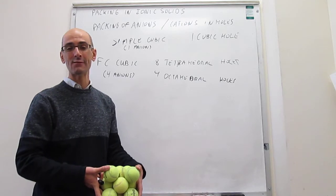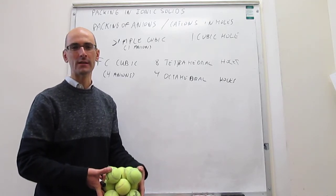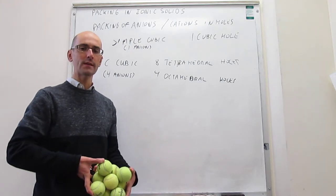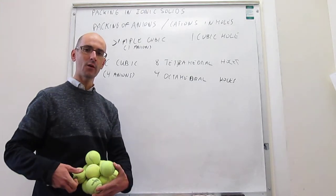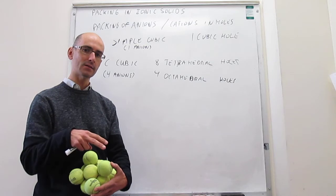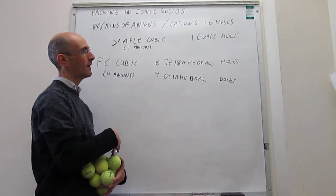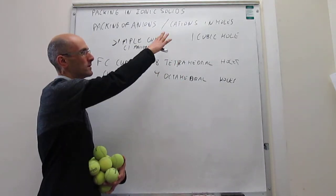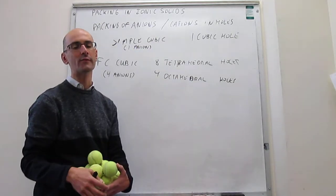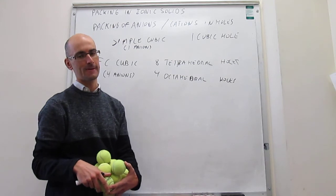In the next few videos, we're going to calculate the geometry of the octahedral holes, and then we'll see that depending on the relative size of the anions and the cations, you would prefer to pack according to any of these systems — governed by the relative size between the anions and the cations.